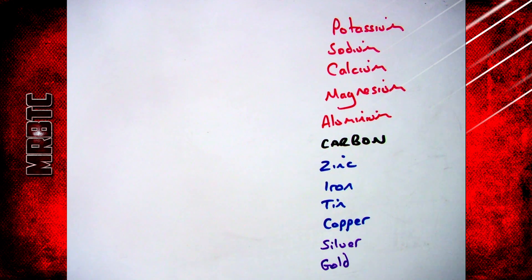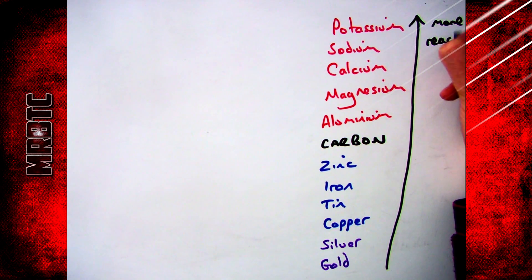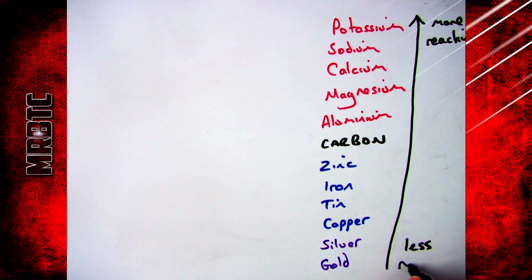Here you can see the order of reactivity from potassium all the way down to gold. Potassium is the most reactive and gold is the least reactive in this list.